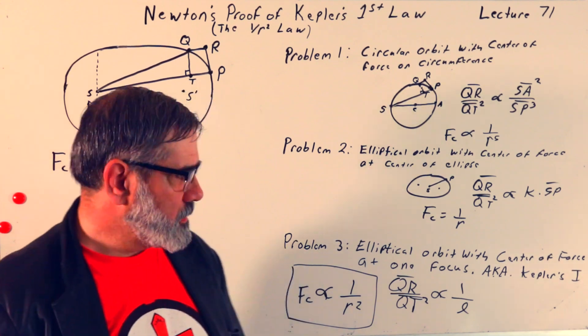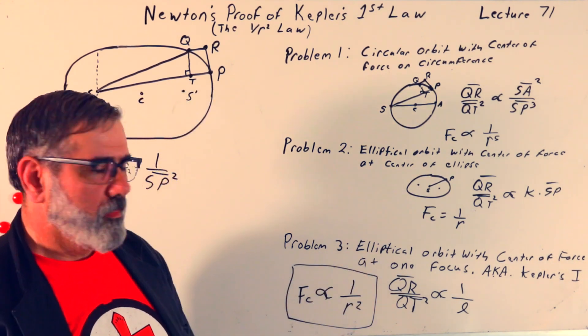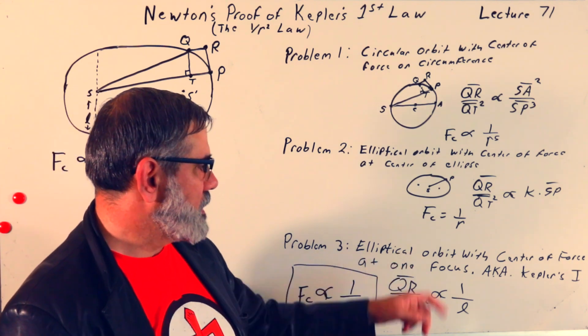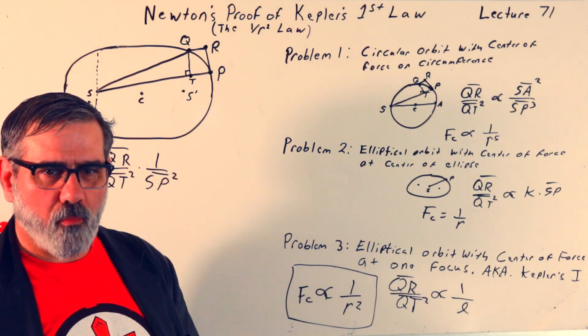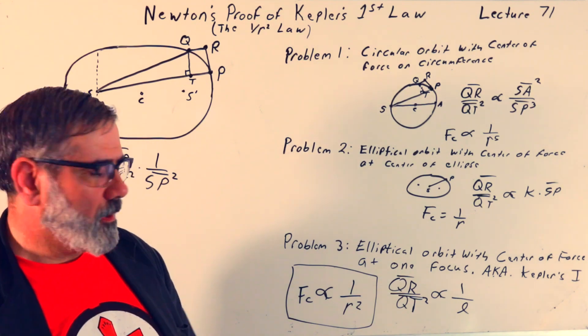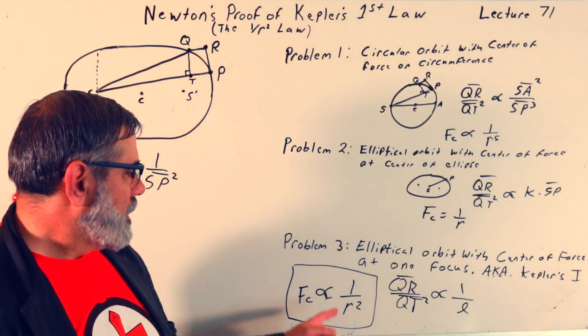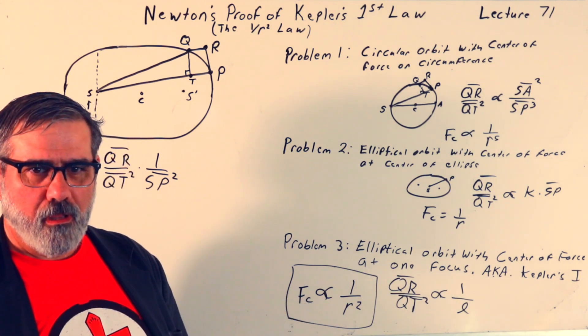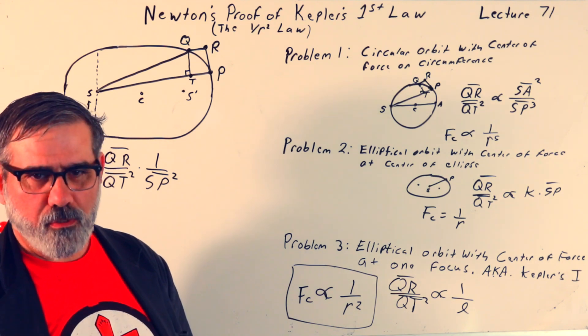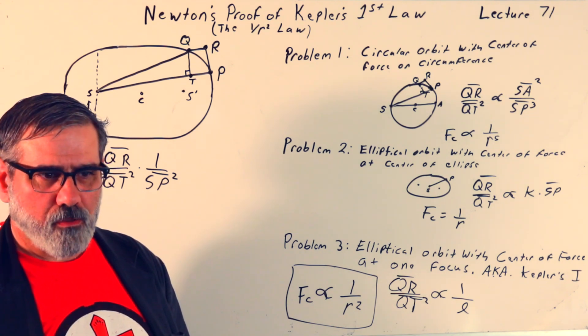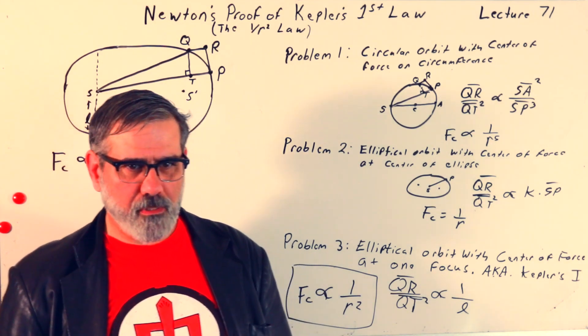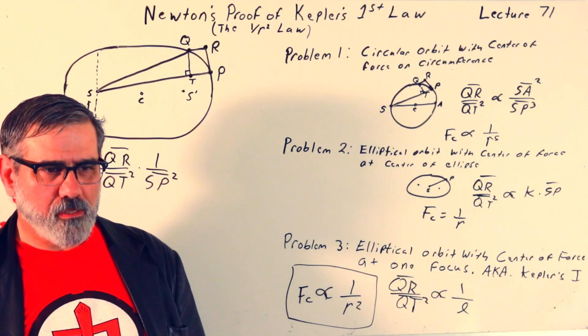And so, what does that do? That means that the centripetal force is proportional to 1 over r squared. And he concluded, he said, therefore, since the empirical evidence indicates that this is true, that orbits are elliptical, with their center of force at one of the foci, that the force is obeying a 1 over r squared law, or inverse square law is what it's usually called. And so, this was his big universal gravitation result, that the force responsible for the orbits obeys an inverse square law.